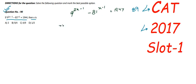Let us do this in an easier format. This can be written as 9^(2x−1) minus 81^(x−1). As we know, 81 equals 9 squared, so 81^(x−1) can be written as 9^(2x−2), which is equal to 1944.